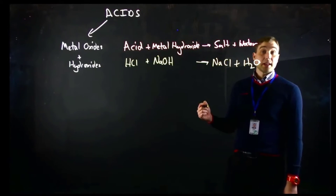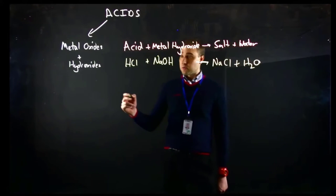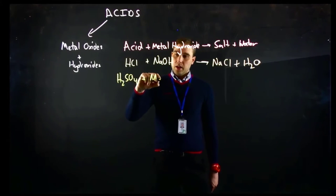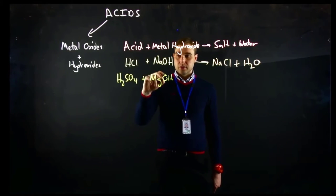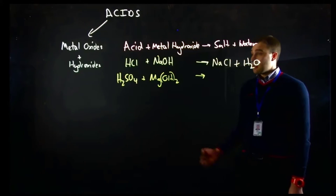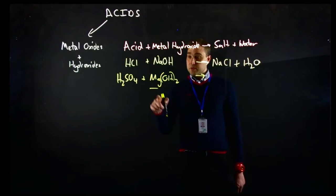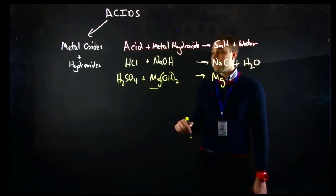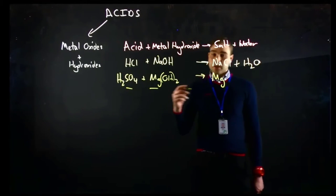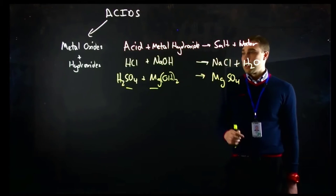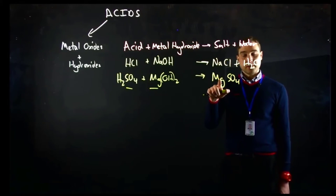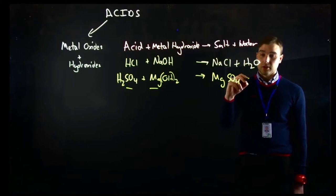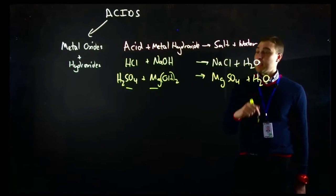In our second example we're going to look at the reaction between sulfuric acid and magnesium hydroxide. To figure out the salt: we've got the positive part of the base, that's going to be the magnesium, and the negative part of the acid is the sulfate ion. Magnesium has a charge of 2+ and sulfate has a charge of 2−, so they balance out — that's okay. And water.